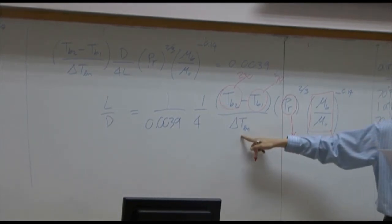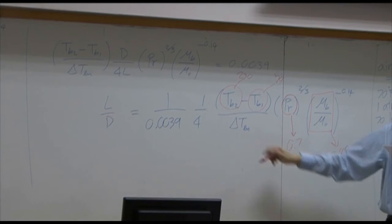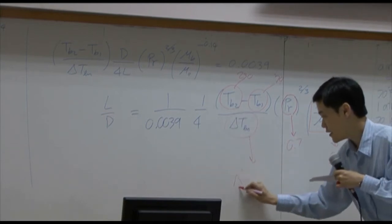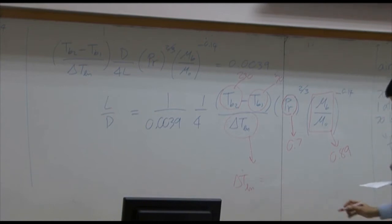How about delta T log mean? By definition, delta T log mean would equal to temperature difference at the inlet subtracted by temperature difference at the outlet divided by difference in logarithm. Just try to understand that delta T log mean is the average. Average of temperature difference.